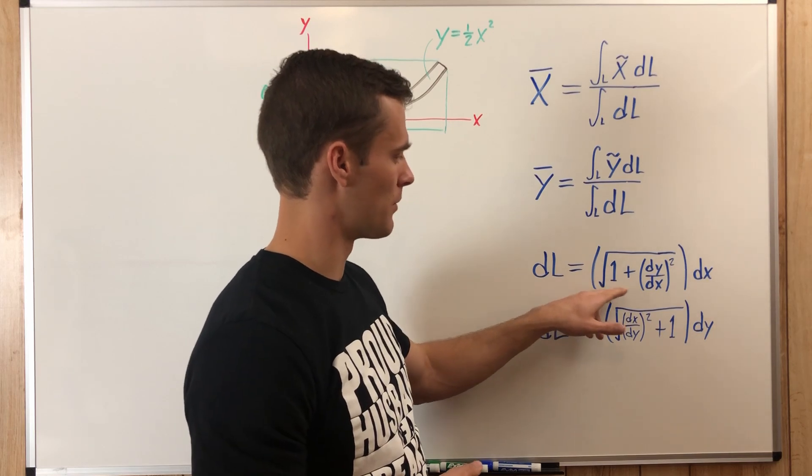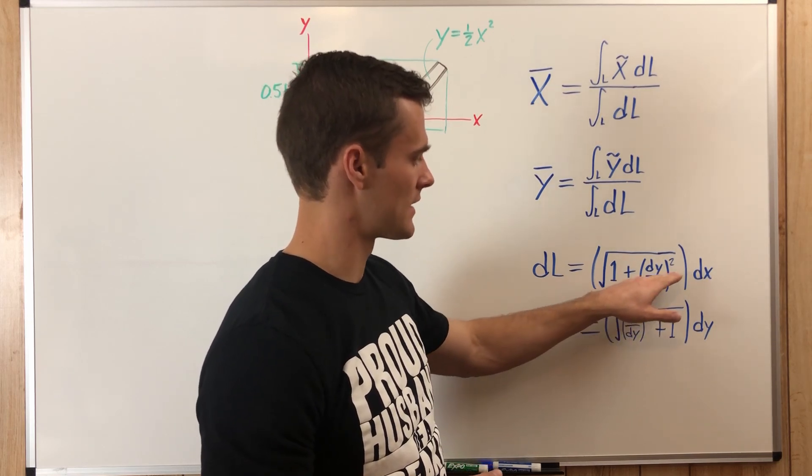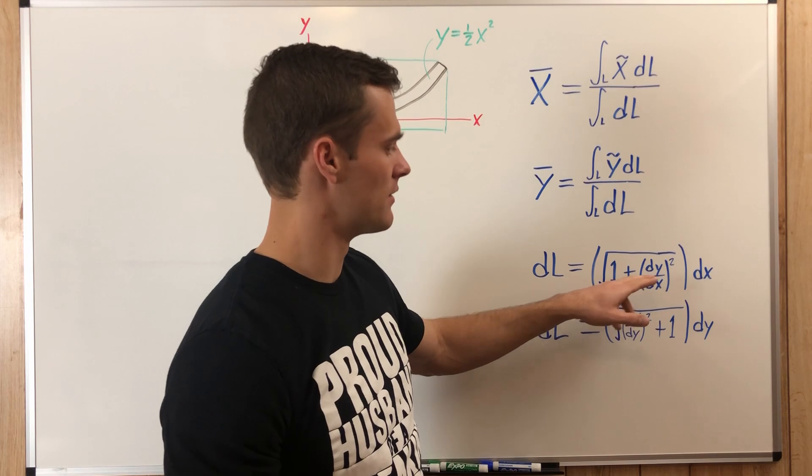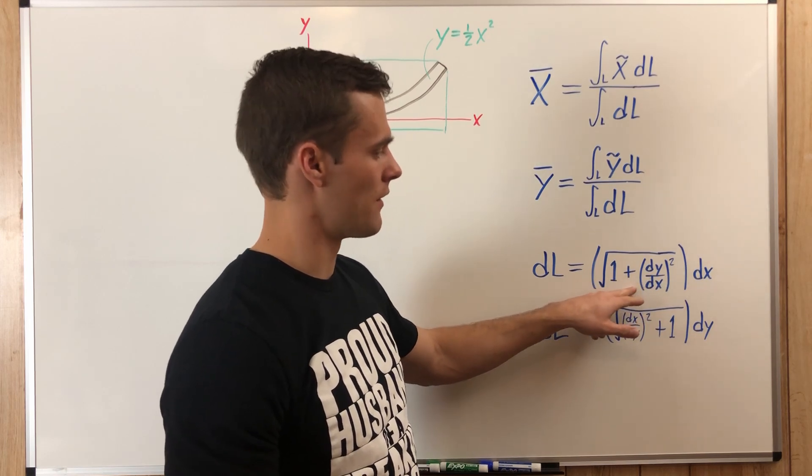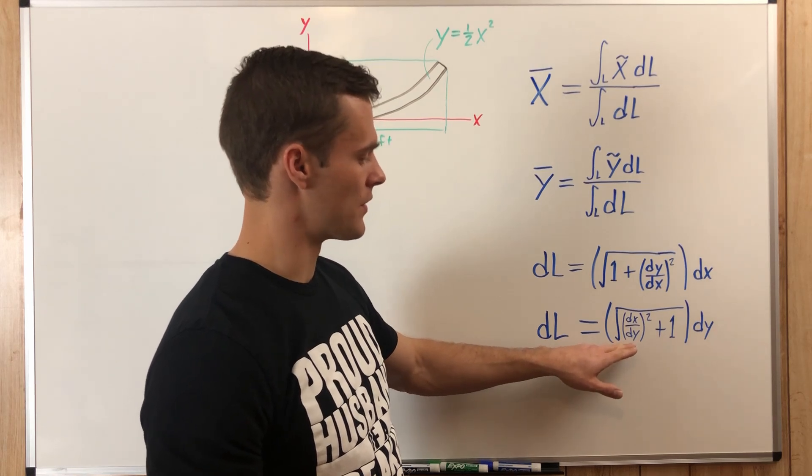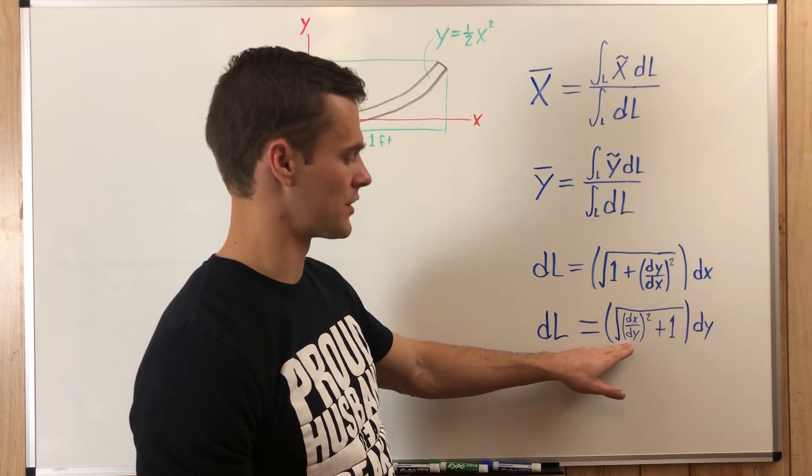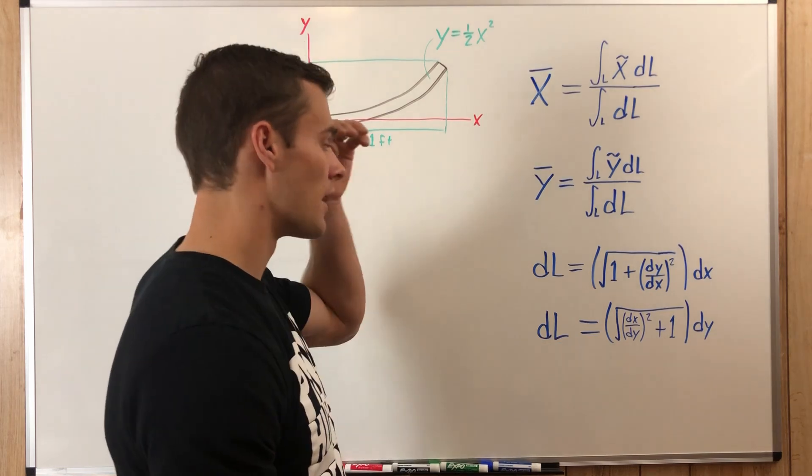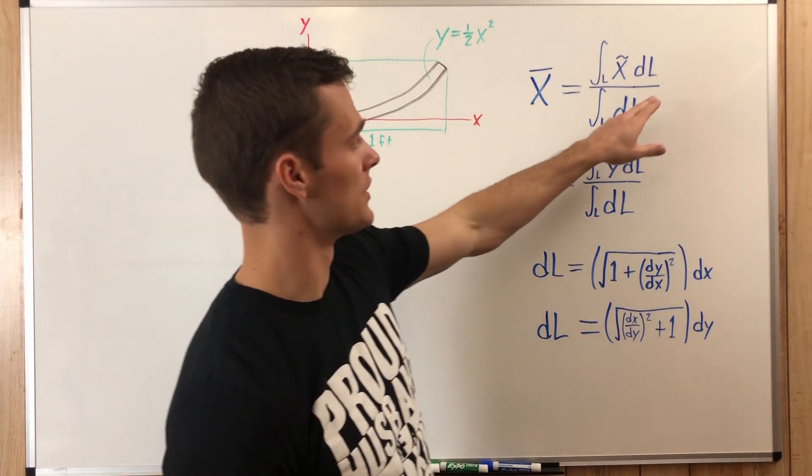So it's the square root of 1 plus dy dx squared. So that'll be, in this case, the derivative of the y function with respect to x. And in this case, the derivative of the x function with respect to y. And then you'll just plug those into the integral.